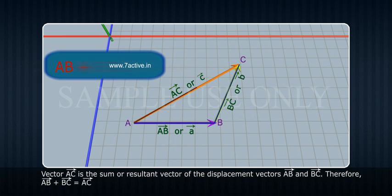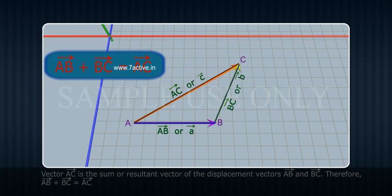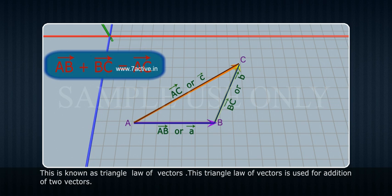Therefore, AB bar plus BC bar equals AC bar. This is known as the Triangle Law of Vectors. This Triangle Law of Vectors is used for addition of two vectors.